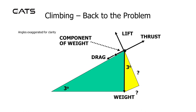Now if I re-add the symbology and arrows, we can see the line acting vertically downwards is weight alongside the yellow triangle, and the two missing sides are the force opposing lift and the rearwards component of weight.